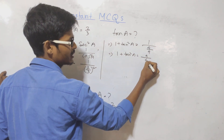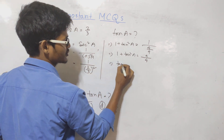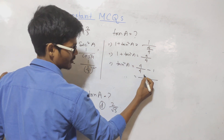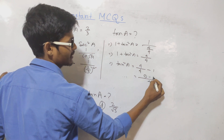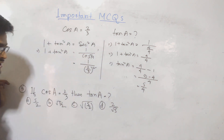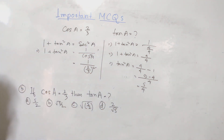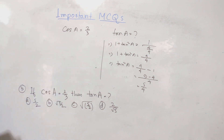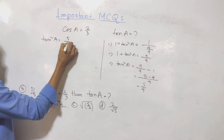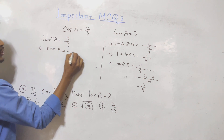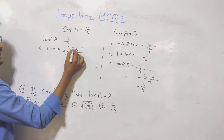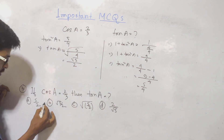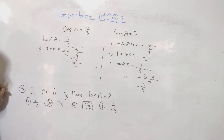So 1 plus tan squared theta equals 9 by 4, which means tan squared theta equals 9 by 4 minus 1, which is 5 by 4. Therefore tan theta equals the square root of 5 by 4, which gives us root 5 by 2. The answer is root 5 by 2.